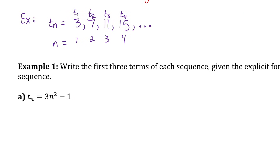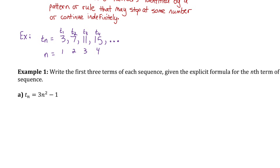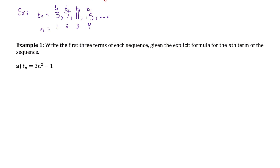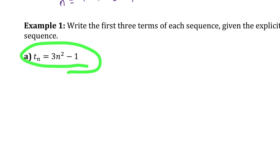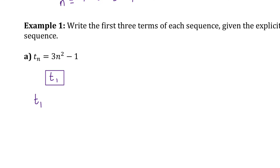Let's look at formulas that describe sequences of numbers. Example 1 says: write the first three terms of each sequence given the explicit formula for the nth term. Part A has the formula Tn equals 3 times n squared minus 1. To find term 1, I substitute 1 for n: 1 squared is 1, times 3 is 3, minus 1 is 2. So the first term is 2.